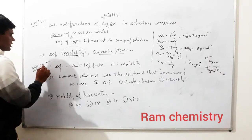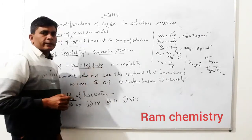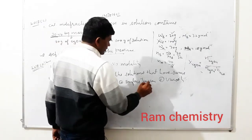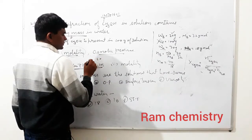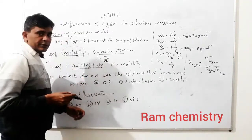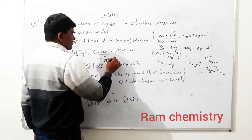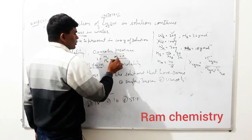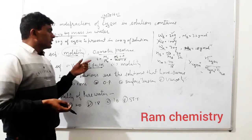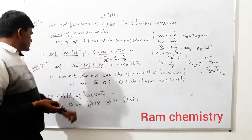2018 Set D mein first question was: define van't Hoff factor. Van't Hoff factor 'i' kya hota hai? i = MC upon MO — it is the ratio of calculated molar mass to observed molar mass. Alternatively, i = observed colligative property upon calculated colligative property. Molality ki definition yahan par discuss kar li hai.